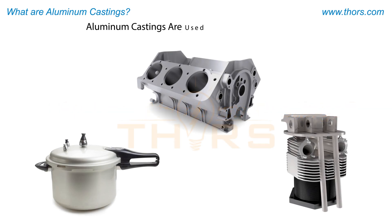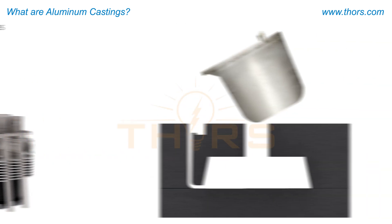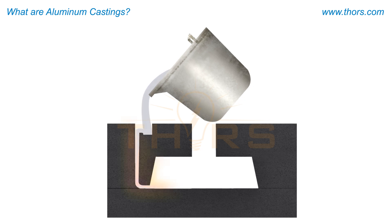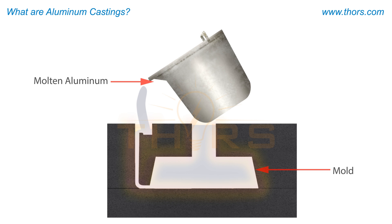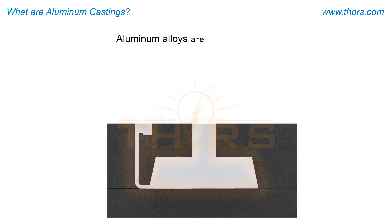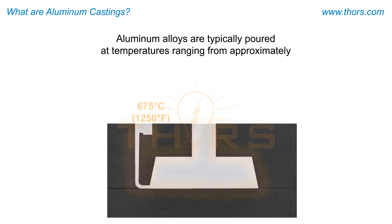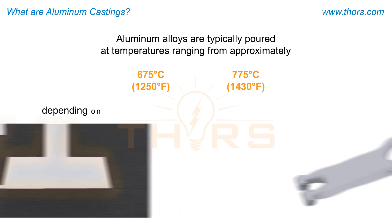Aluminum castings are used in a variety of industries such as food service, automotive, aerospace, and many others. The production of cast aluminum involves heating the metal to molten temperatures and pouring it into molds of a specific size, shape, material, and design. Aluminum alloys are typically poured at temperatures ranging from approximately 675 to 775 degrees Celsius, depending on